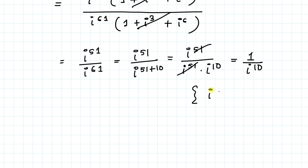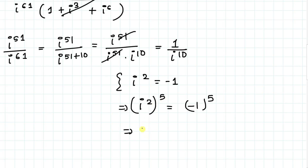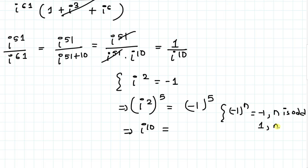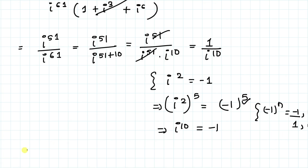We know that iota squared equals minus 1. Raising both sides to the power 5, we get iota squared whole to the power 5 equals minus 1 whole to the power 5. Applying the exponential rule, powers multiply, so iota to the power 10 equals minus 1 to the power 5. Since minus 1 to the power n equals minus 1 when n is odd and 1 when n is even, and here n is 5 which is odd, minus 1 to the power 5 equals minus 1. Therefore iota to the power 10 equals minus 1. So our expression 1 divided by iota to the power 10 equals 1 divided by minus 1, which equals minus 1. That is our answer.